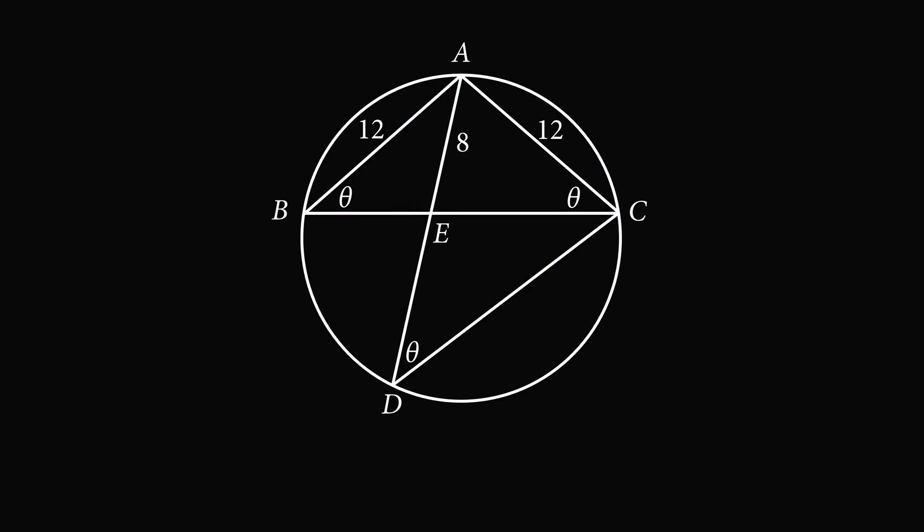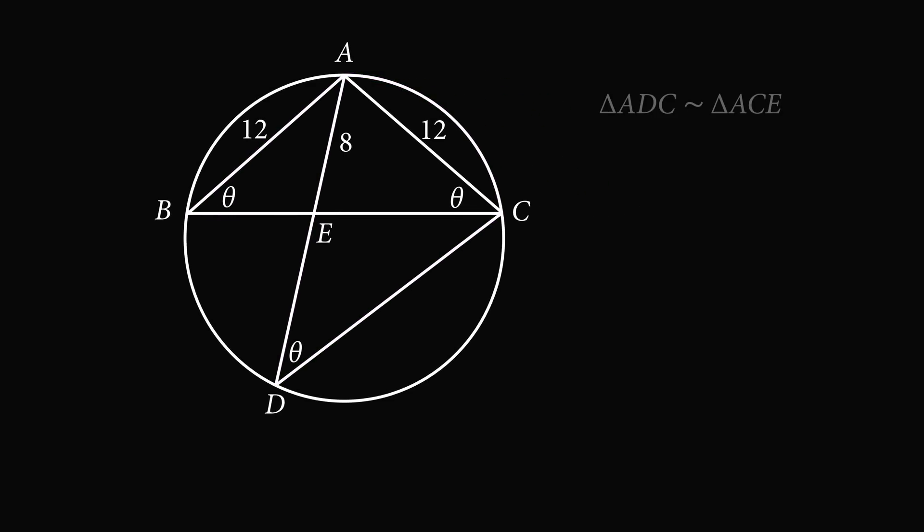Now, we will show that triangles ADC and ACE are similar. They have two equal angles of theta, and then DAC is equal to EAC.